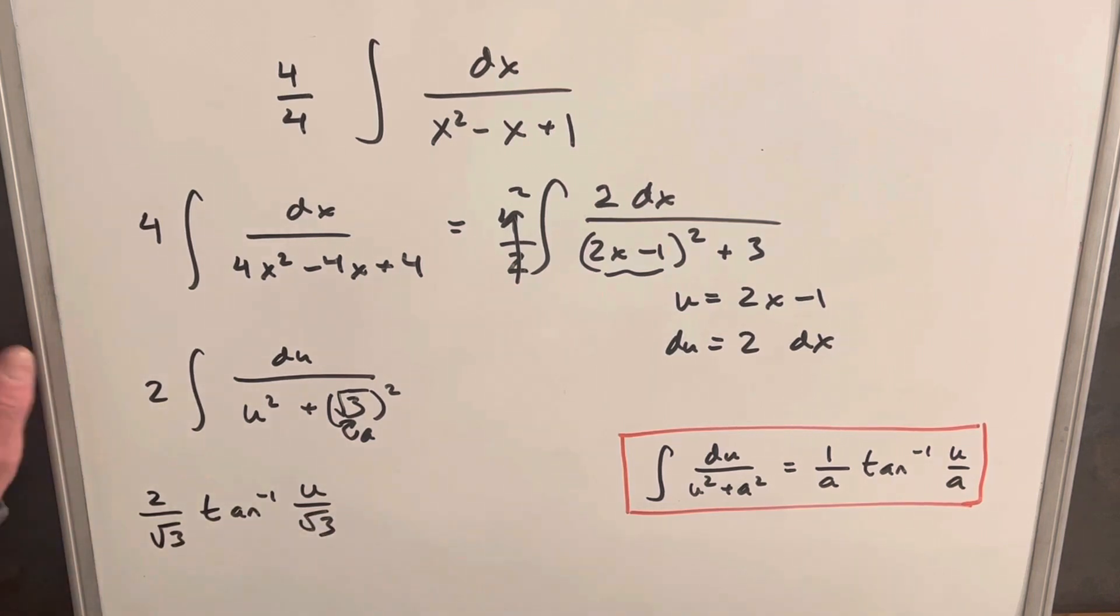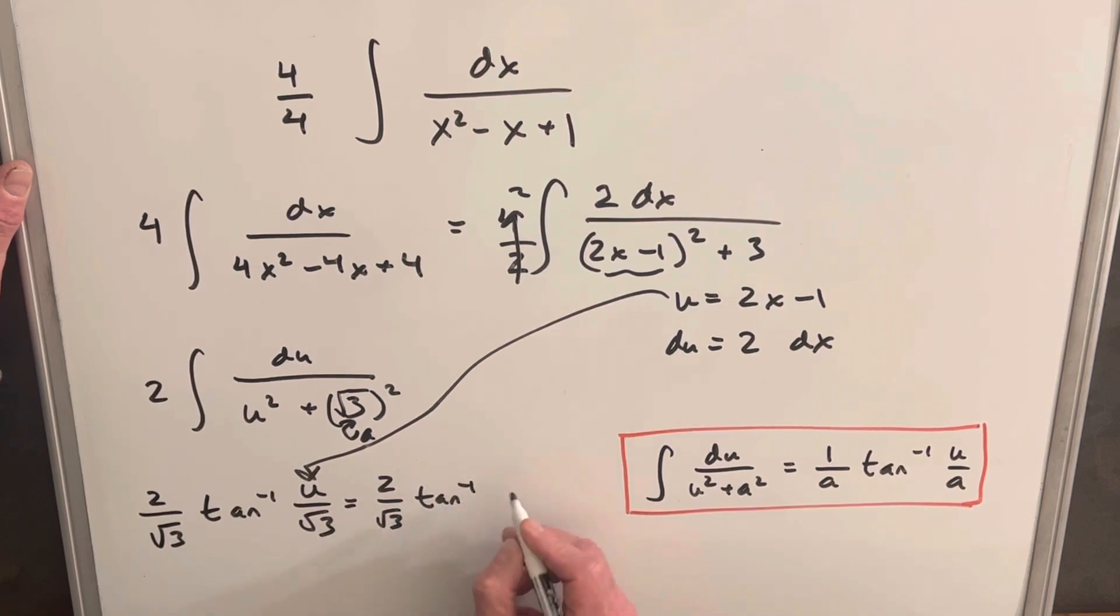Now all we need to do is just back substitute. We'll take our u here and plug that in. And we're left with 2 over square root of 3, tan inverse 2x minus 1 all over square root of 3 plus c.